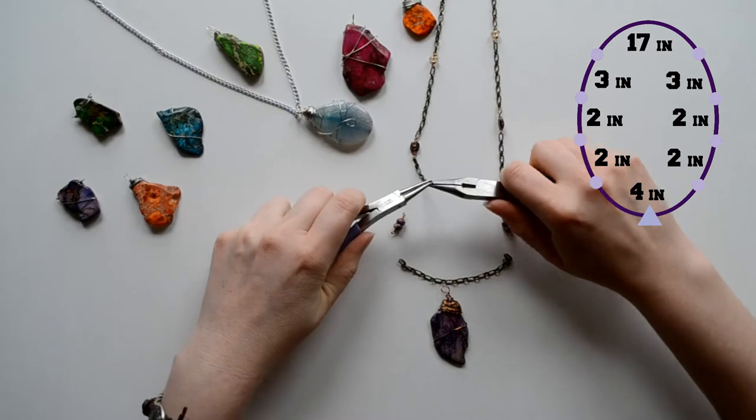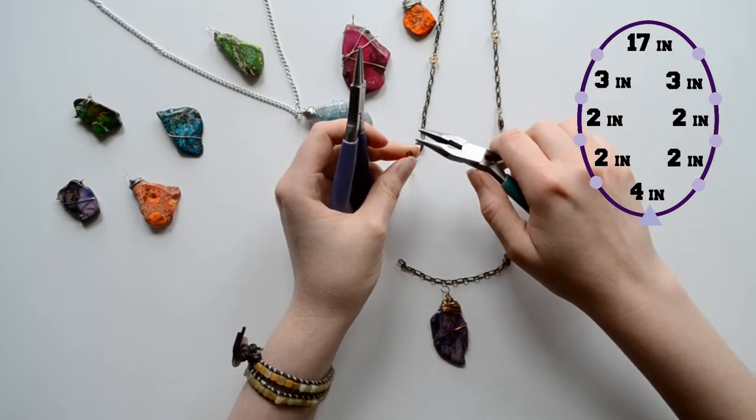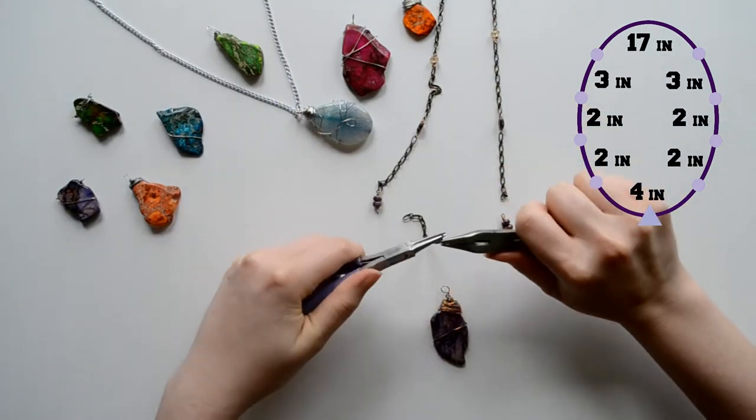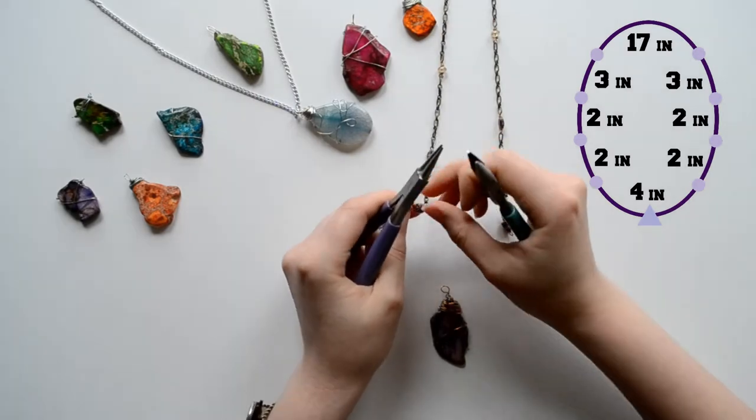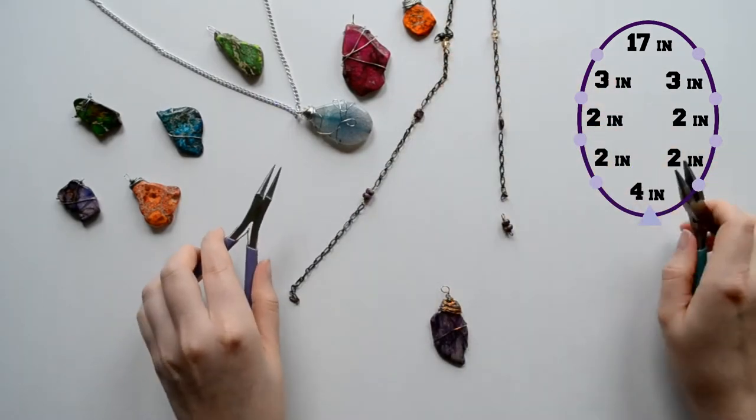Finally, we're on our last step. We're going to add the last set of beads and our very last chain, which is four inches long. We're going to attach a bead on each side. And before we completely attach it to the other side, we're going to string our bead pendant.